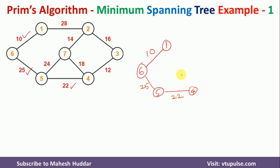Again we consider the neighbors of all visited nodes. The remaining neighbor of node 5 is node 7. The neighbor of node 4 is node 3, and the neighbor of node 1 is node 2. Among these, the neighbor of node 4 — that is node 3 — has the minimum weight. So we draw an edge from node 4 to node 3 with weight 12.